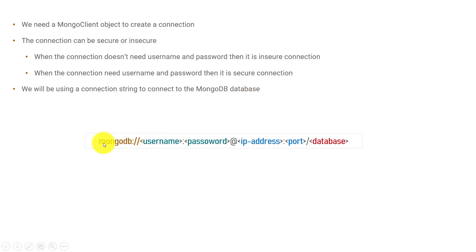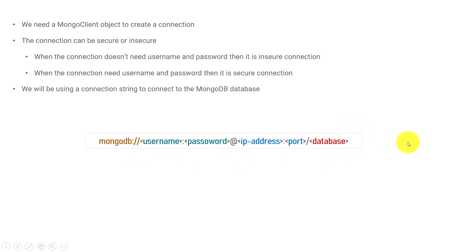The connection string looks something like this: it contains the MongoDB protocol, then username and password, then IP address, port, and database name. There can also be other configuration options like read priority, write priority, and replication, which can be passed as query parameters.